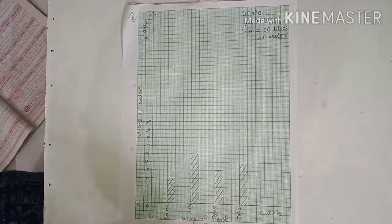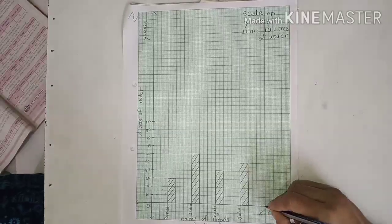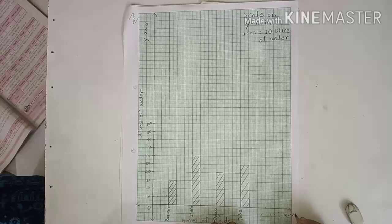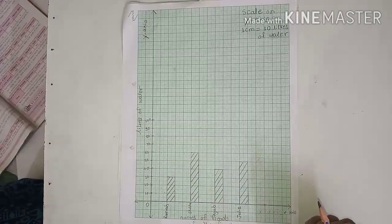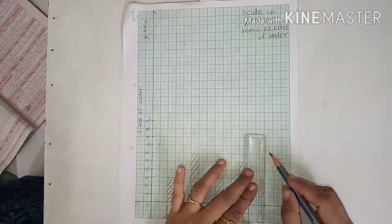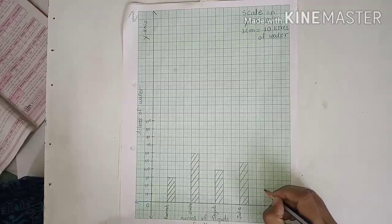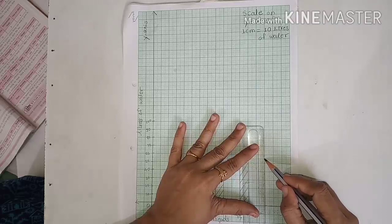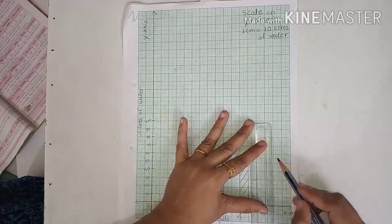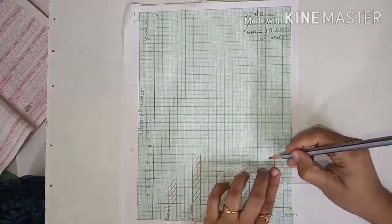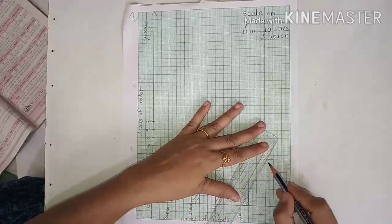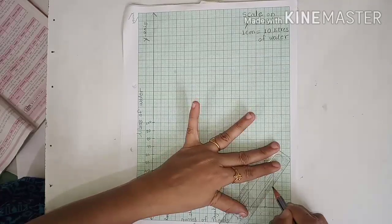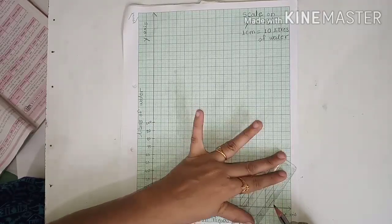Now the last one, Rahul. Rahul's family. We can write this x-axis name here also. Rahul and his family uses 55 liters of water. So now 55: 10, 20, 30, 40, 50, and 55.